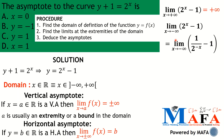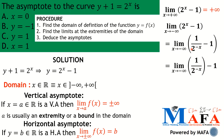Now let's compute the limit as x tends to minus infinity. We can write two raised to the power x as one over two raised to the power negative x. As x tends to minus infinity, negative x tends to plus infinity. The limit of a constant is a constant, so the limit is only affecting the term one over two to the power negative x.